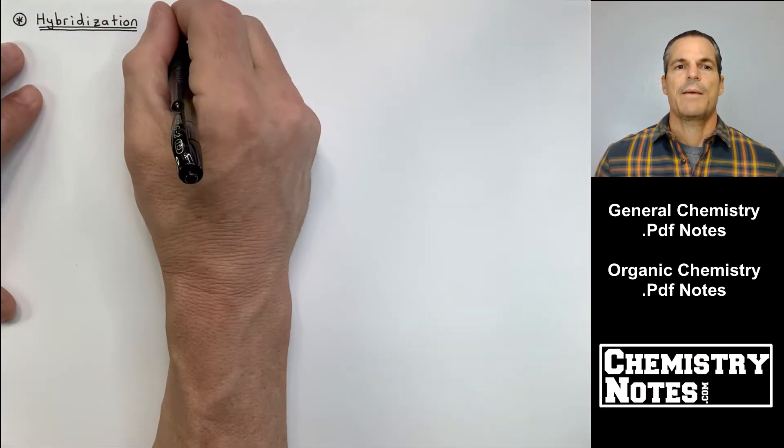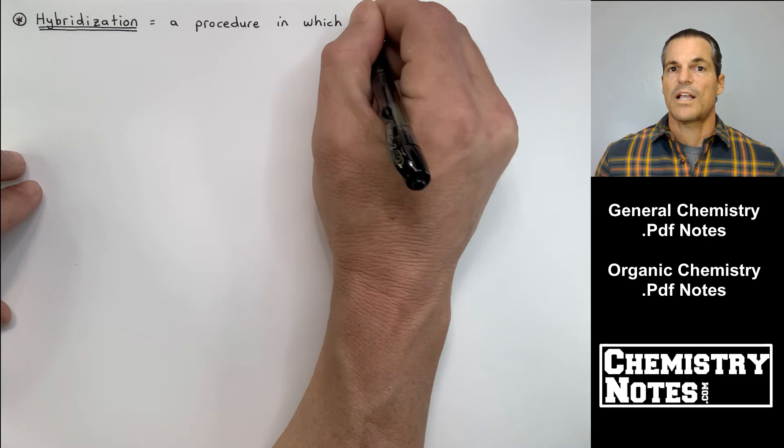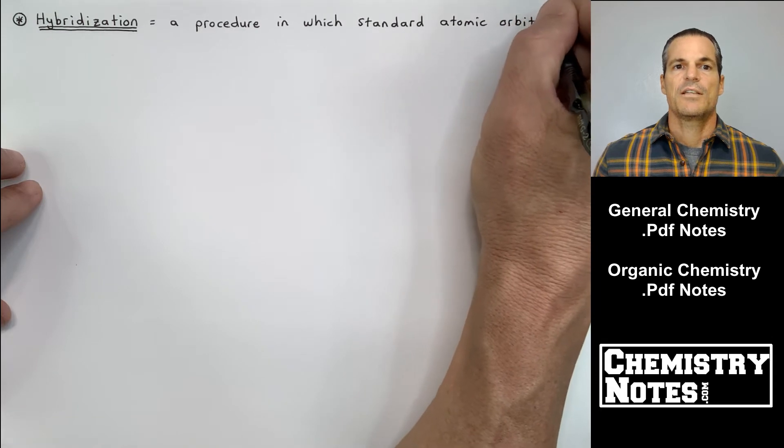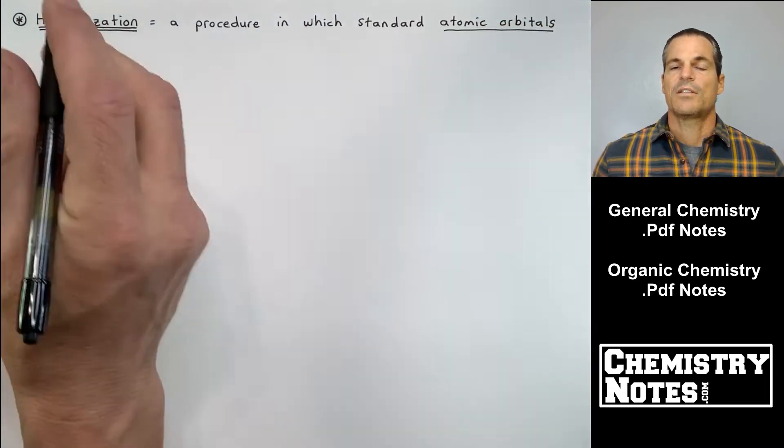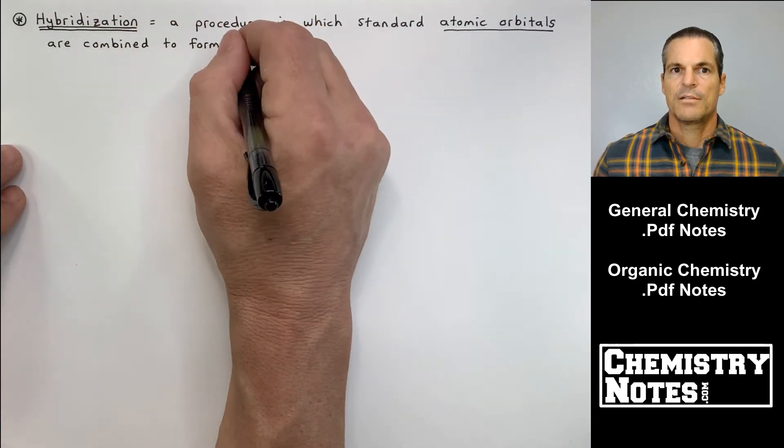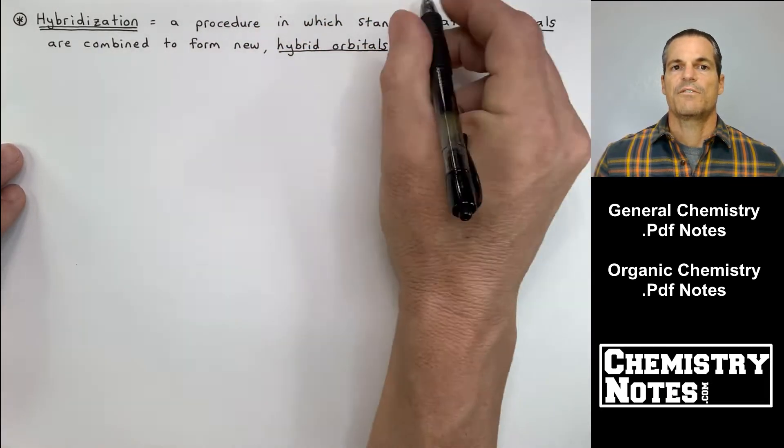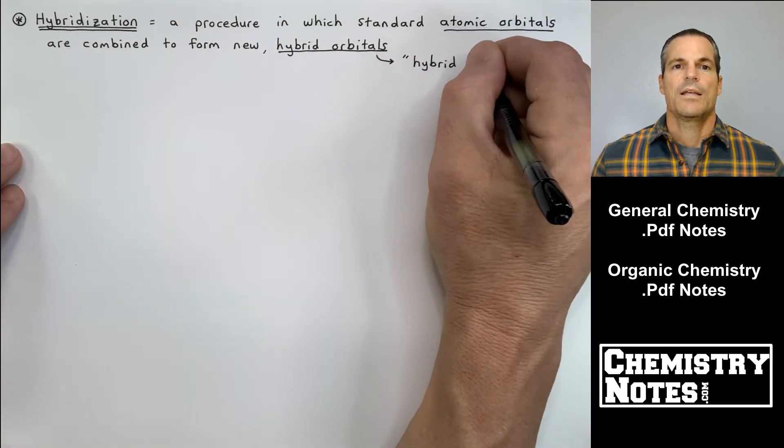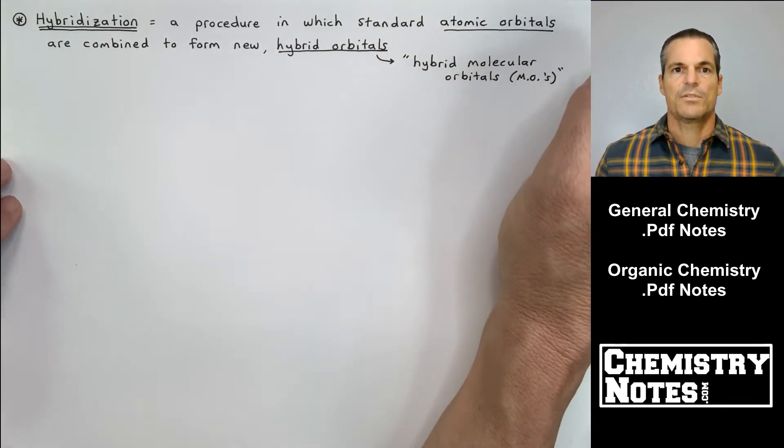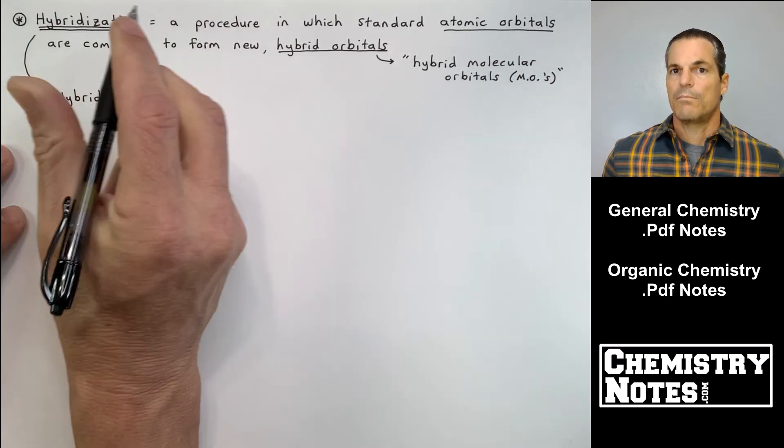Sometimes hybridization and the discussion of hybrid orbitals is called the localized electron model. We'll write that down in our notes in just a few seconds. Hybridization is a procedure in which standard atomic orbitals, like the 2s and the 2p, are combined to form new hybrid orbitals. This is the first time we've seen the phrase hybrid orbitals. Sometimes they're called hybrid molecular orbitals, but I like to just call them hybrid orbitals because I don't want to confuse the localized electron model with molecular orbital theory. We're going to talk about that much later in this section.